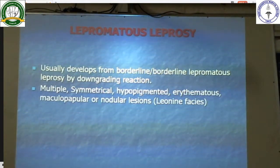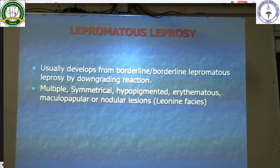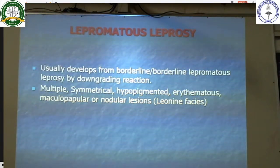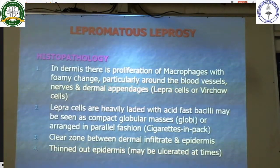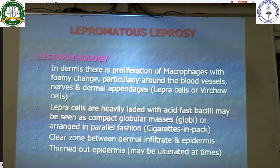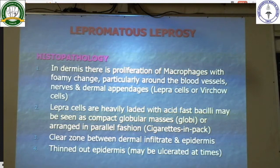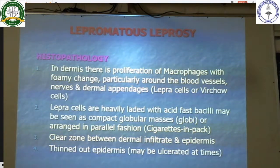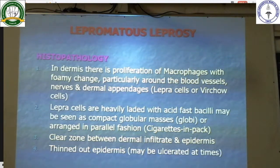In lepromatous leprosy, it usually develops from borderline or borderline lepromatous leprosy by a downgrading reaction. Multiple symmetric hypopigmented erythematous maculopapular or nodular lesions are seen in the skin. On histopathological examination, in the dermis there is a proliferation of foaming macrophages particularly around blood vessels, nerves, and dermal appendages. These are called lepra cells or Virchow cells. Leprous cells are heavily laden with acid-fast bacilli and may be seen as compact globular masses called globi, or arranged in a parallel fashion called cigarettes in a pack. There is a clear zone of demarcation between the dermal infiltrate and the epidermis, and the epidermis is thinned out or ulcerated.